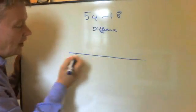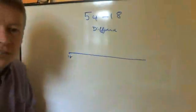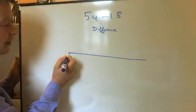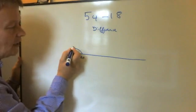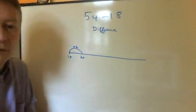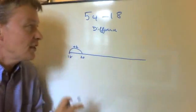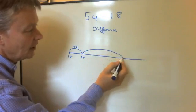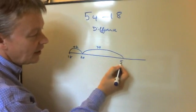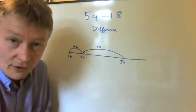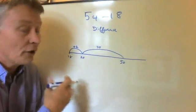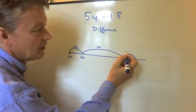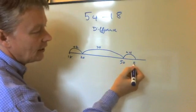So here's my number line, and I'm going to start here at 18. Now it's a little bit easier for me to just take two jumps and make a quick hop into number 20, and I make a note there that I've got plus two. The reason it's a little bit easier to go to 20 is because I'm then going to make another jump of 30, and that's going to take me to the number 50. So I'm now in a position where I've only got another four jumps to make to get me to 54 — plus four — 54.